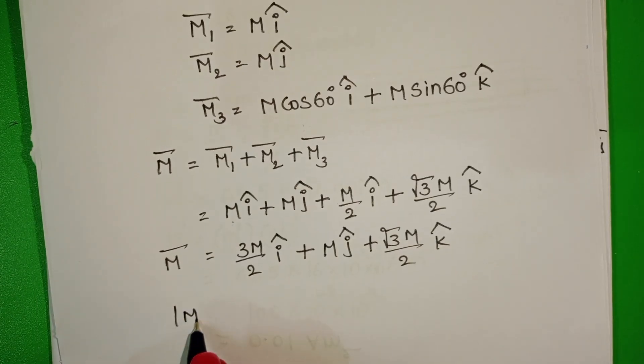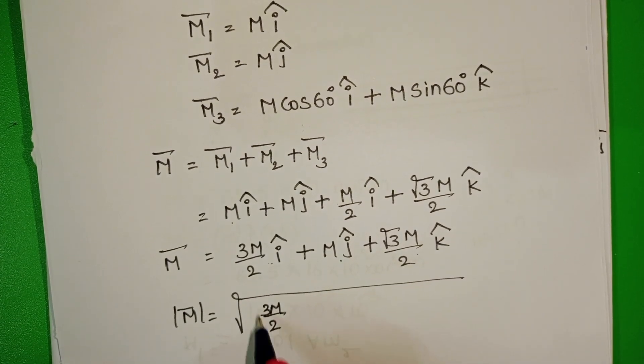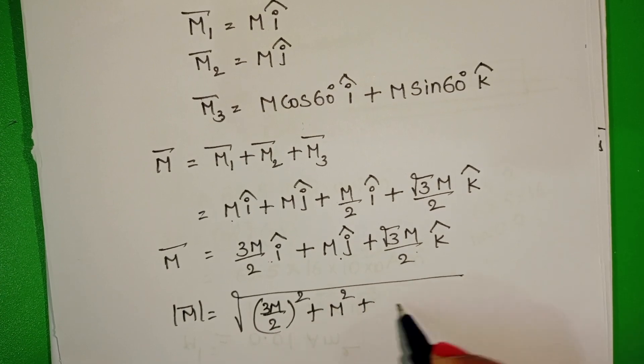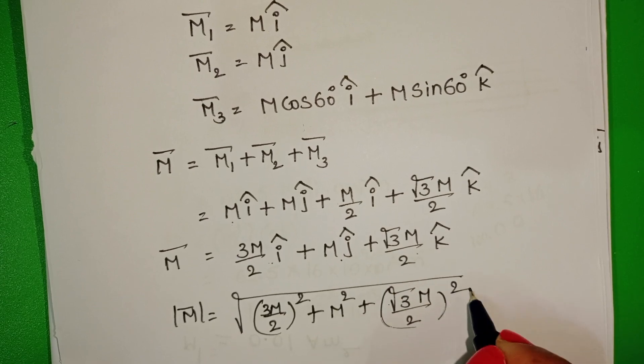Magnitude of resultant magnetic moment equals square root of 3 M by 2 whole square plus M square plus root 3 M by 2 whole square.